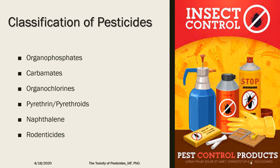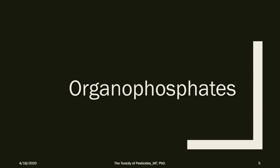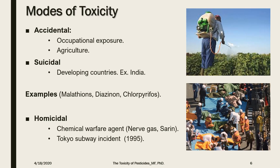There are several classifications for pesticides, but for the sake of this lecture we will focus on the groups listed on this slide. Starting with organophosphates — organophosphorus compounds are the insecticides most used in Egypt. There are more than 40 different types known and used nowadays, either individually or in mixed forms.